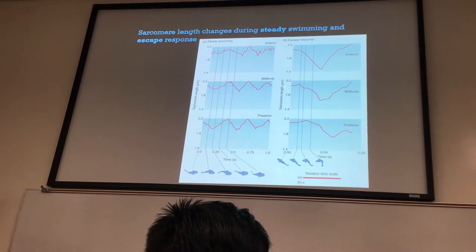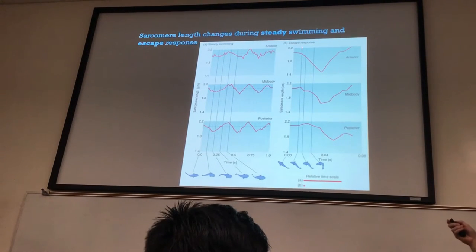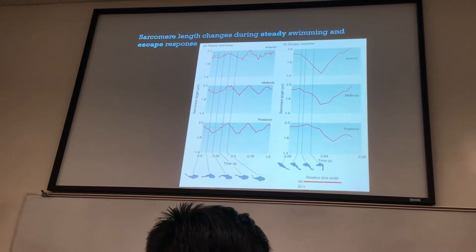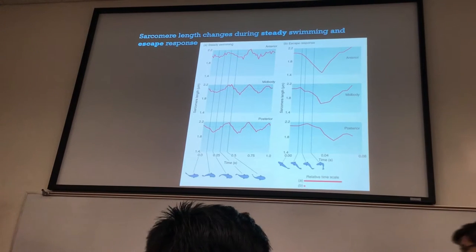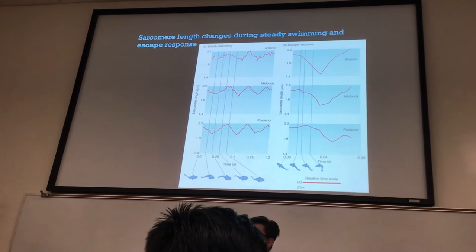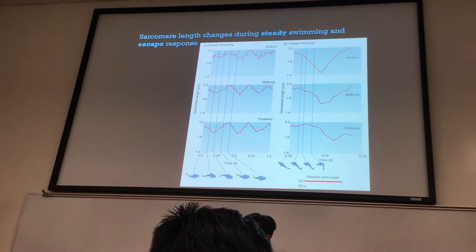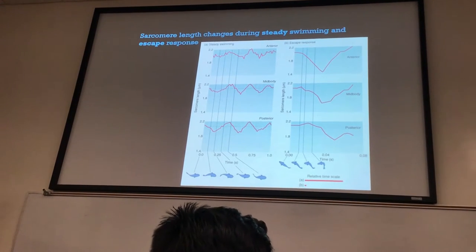During steady swimming. But when we look at the escape response, it's much different. You can see the sarcomere length decreases dramatically in the anterior part of the body, a little less in the mid-body, and even less in the posterior. That's because when the fish really wants to escape, it jackknifes itself, and that stretches the muscles on the opposite side.